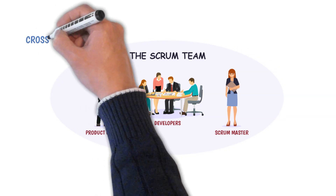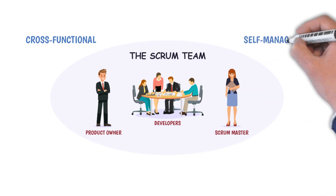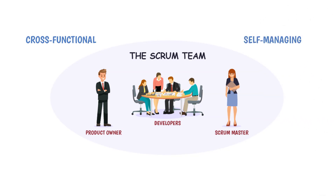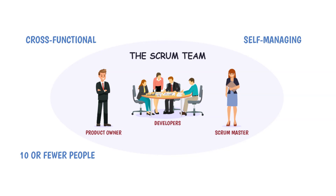Scrum teams are cross-functional, meaning the members have all the skills necessary to create value each sprint. They are also self-managing, meaning they internally decide who does what, when, and how. The Scrum team is small enough to remain nimble, and large enough to complete significant work within a sprint, typically 10 or fewer people.